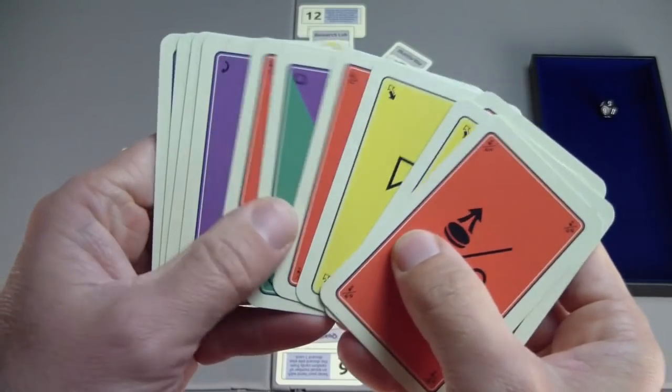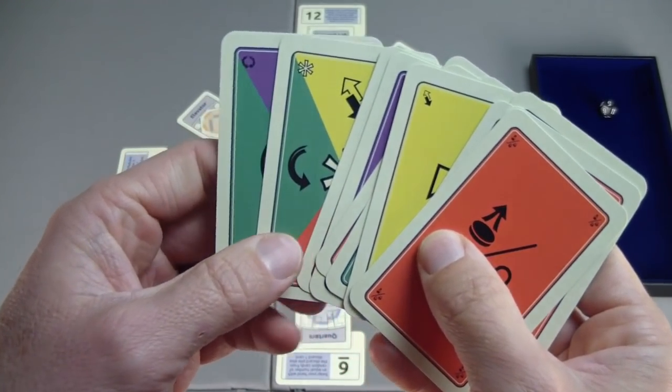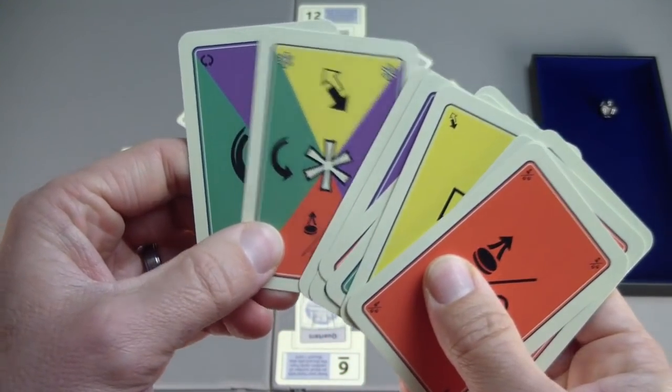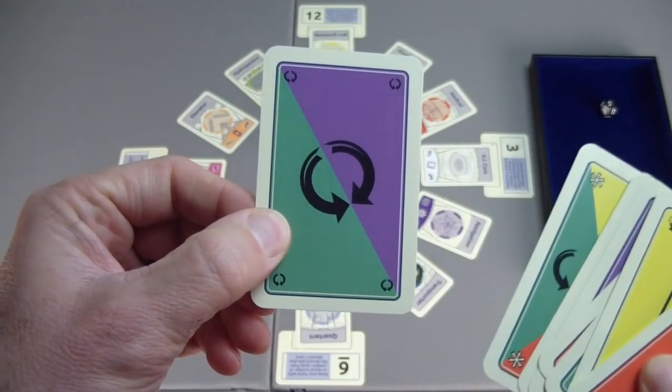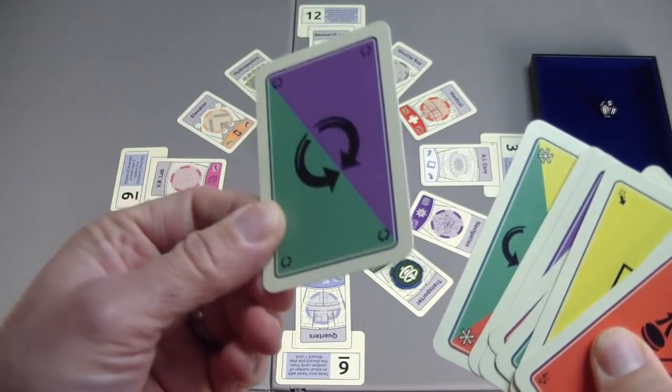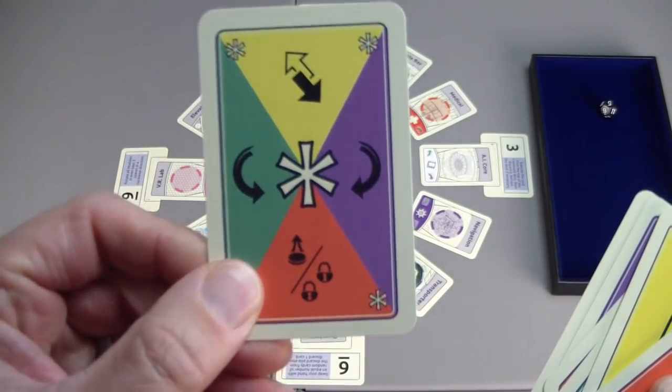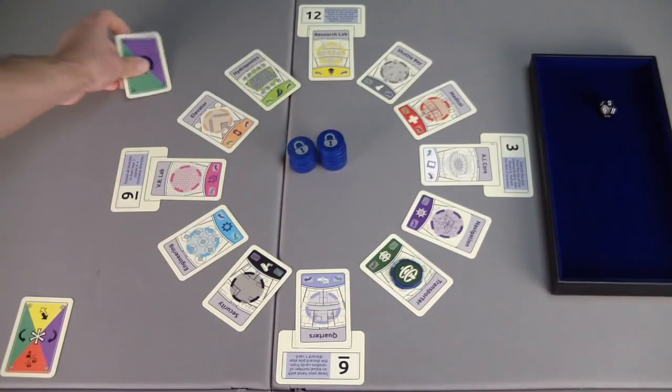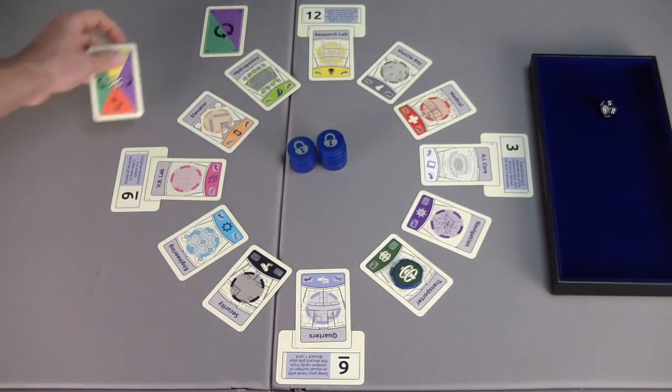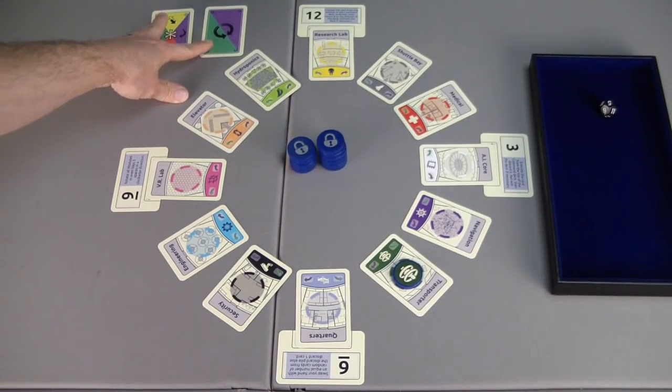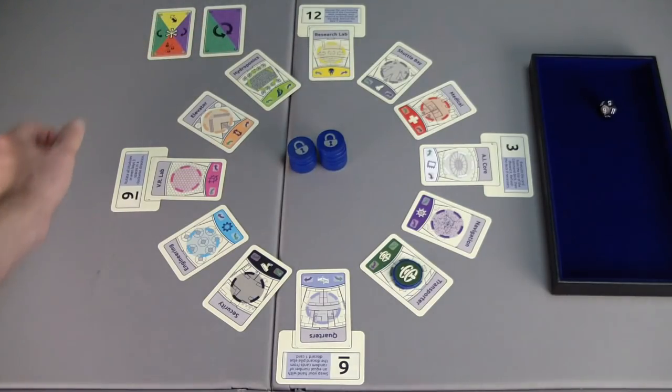Here we have our deck of command cards. And before we start, we remove from this deck the rotate either direction card, or one of the rotate either direction cards, and the wild card. We'll place these up here. We will be receiving those later in the game during a deck refresh phase.